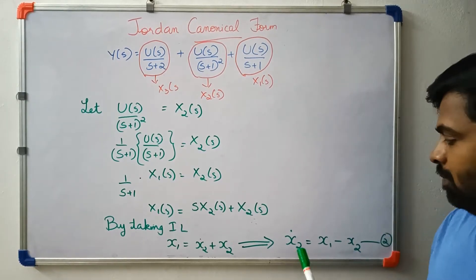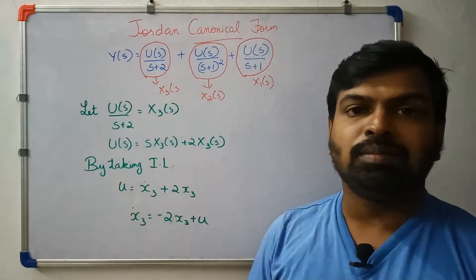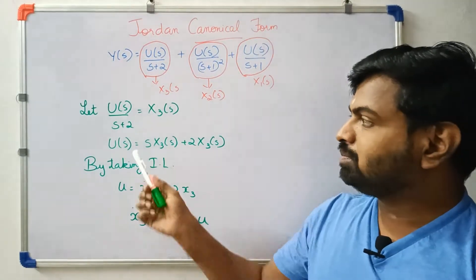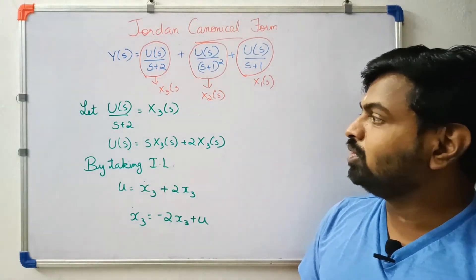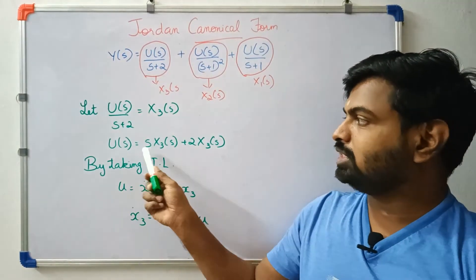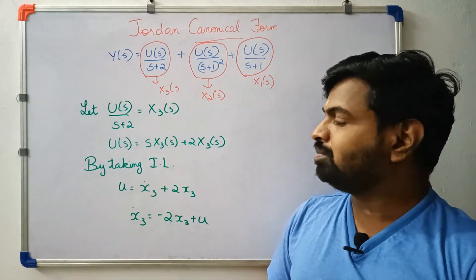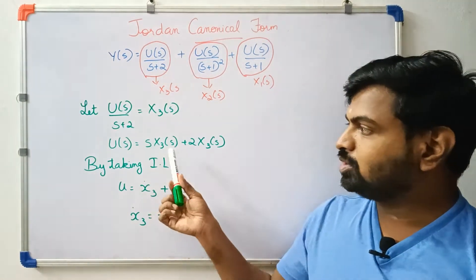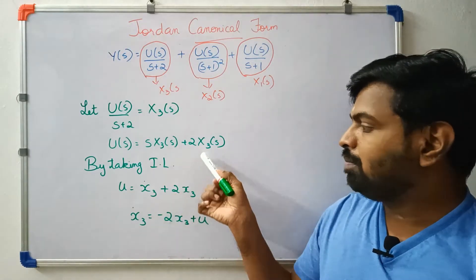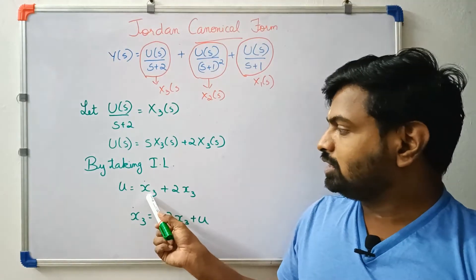The third term: U(s)/(s+2) = X3(s). Cross-multiplying: U(s) = s·X3(s) + 2·X3(s). Taking inverse Laplace: u = x3_dot + 2·x3, so x3_dot = -2·x3 + u.